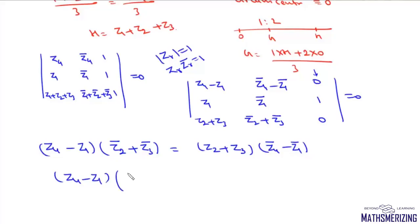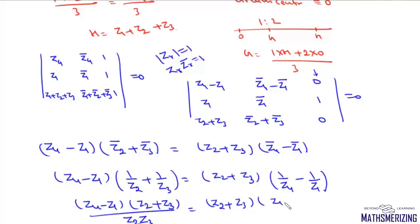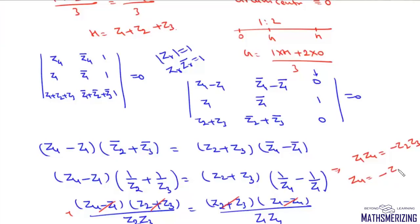Substituting, we write (Z4 - Z1)(1/Z2 + 1/Z3) = (Z2 + Z3)(1/Z4 - 1/Z1). This gives (Z4 - Z1)(Z2 + Z3) / (Z2Z3) = (Z2 + Z3)(Z1 - Z4) / (Z1Z4). The (Z2 + Z3) terms cancel, and with the sign change we get Z1·Z4 = -Z2Z3, so Z4 = -Z2Z3 / Z1. We have proved this result, confirming option B is correct.